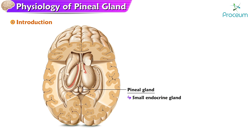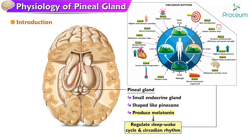The pineal gland is a small endocrine gland located in the center of the brain, above the brain stem, and between the two hemispheres of the brain. It is shaped like a pine cone, hence its name. The pineal gland is responsible for the production of the hormone melatonin, which plays a role in regulating the sleep-wake cycle and circadian rhythm.